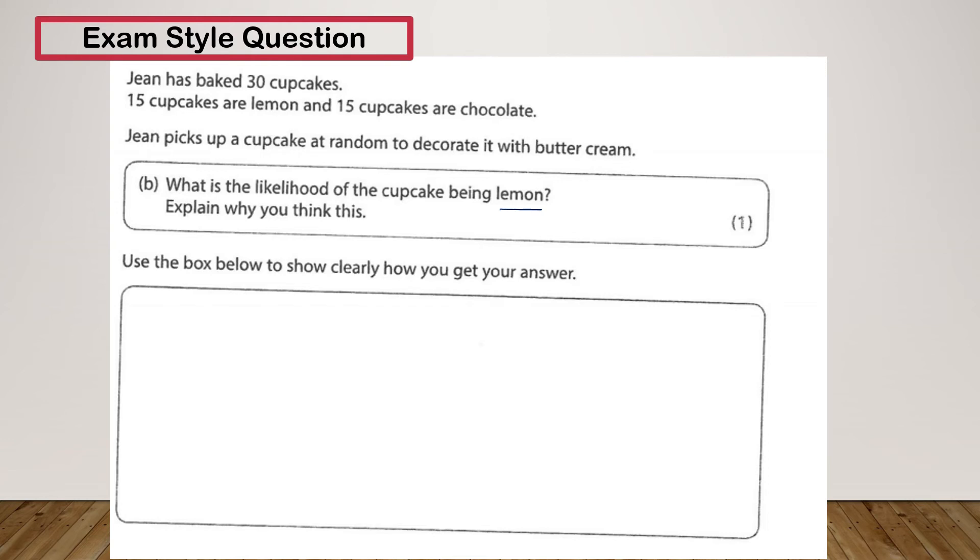Now we've got 15 lemon cupcakes and we've got 30 cupcakes altogether. So the likelihood of it being lemon is 15 over 30. As we know, probability is the event that we're looking for over the total number of events. So there's 15 lemon cupcakes and 30 cupcakes in total. So 15 out of 30 would give us that mark. If we wanted, we could also simplify that to show that it's a half. As I said, simplifying fractions are shown in another video.